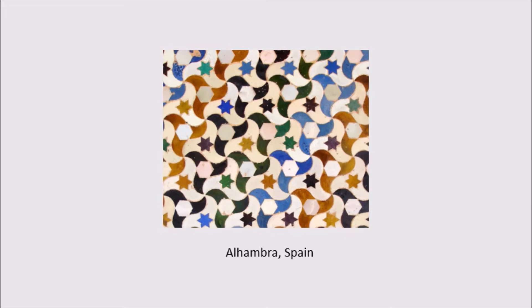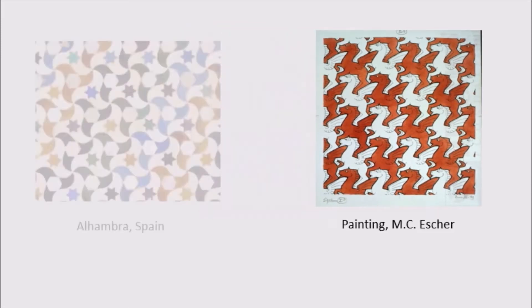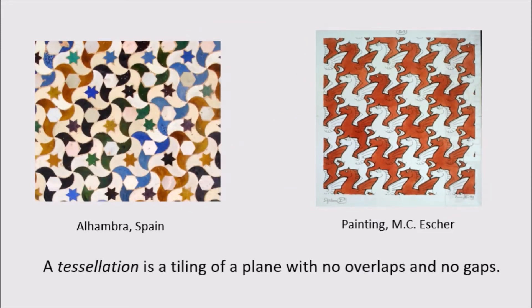Here we have a tiling from the Alhambra in Spain, which is this great big castle that the Moors built in the 15th century. And here we have a painting by M.C. Escher, who is a Dutch artist who lived in the 20th century. Both of these are examples of tessellations, which are tiling of the plane with no overlaps and no gaps.